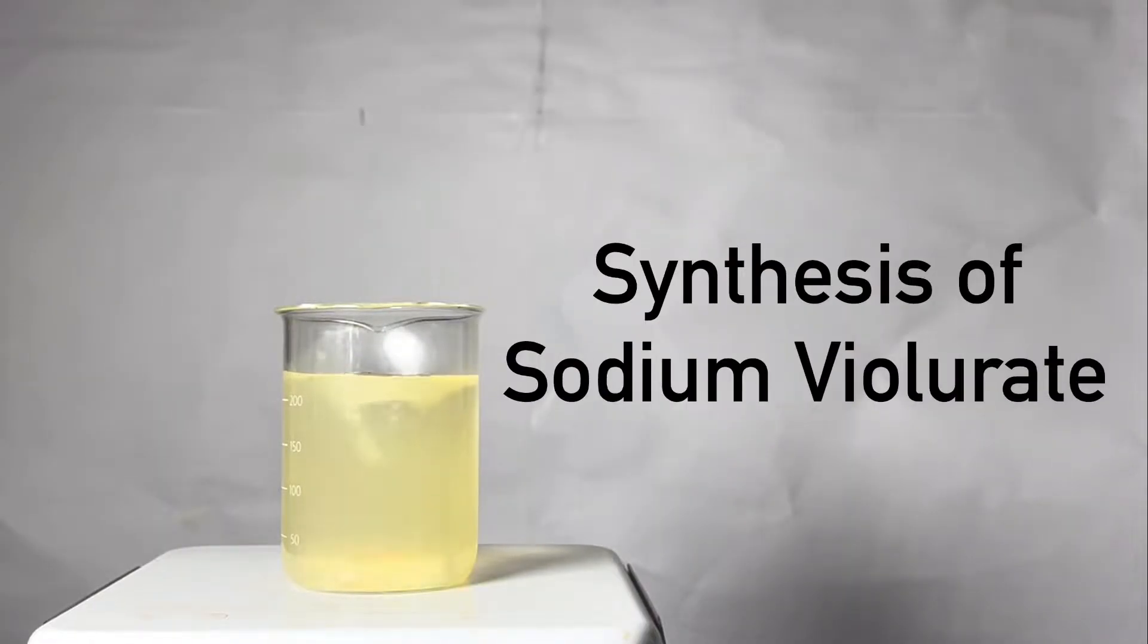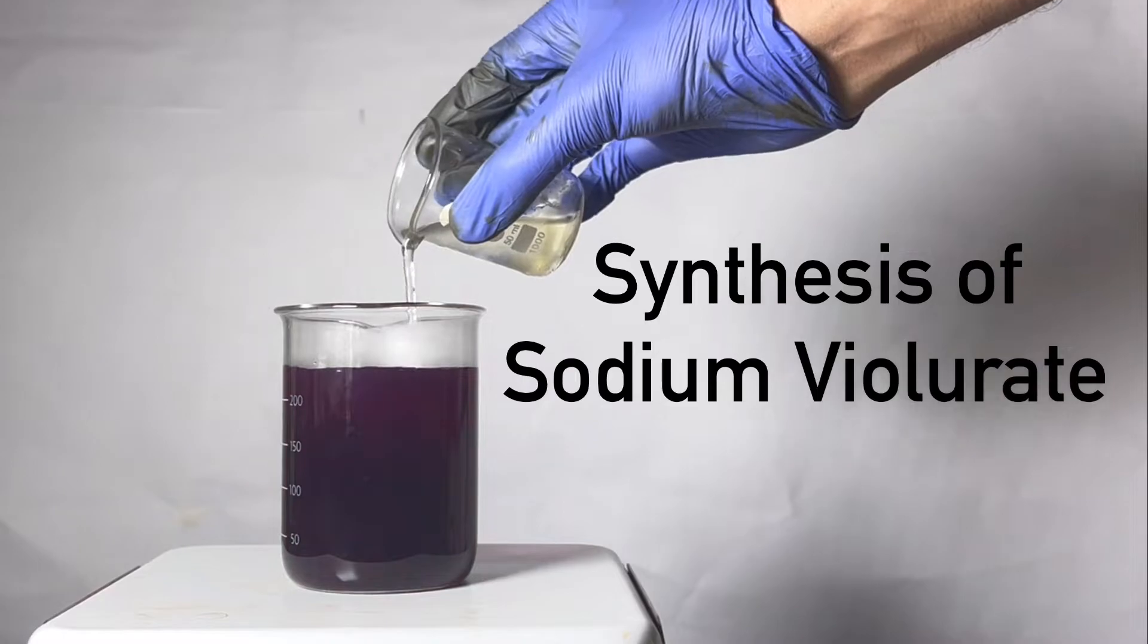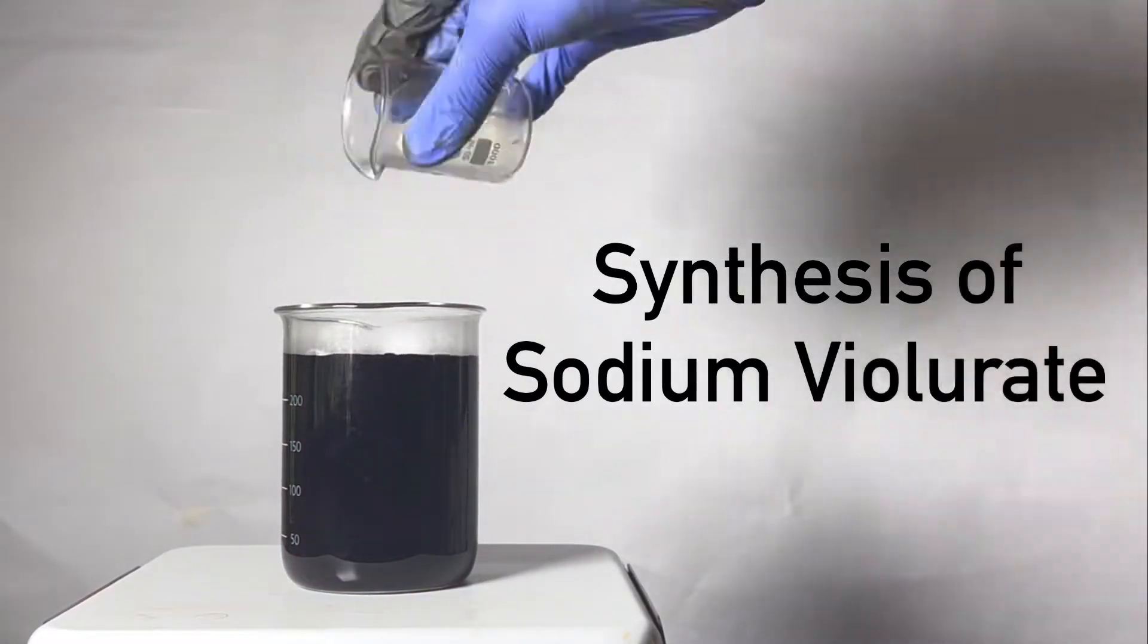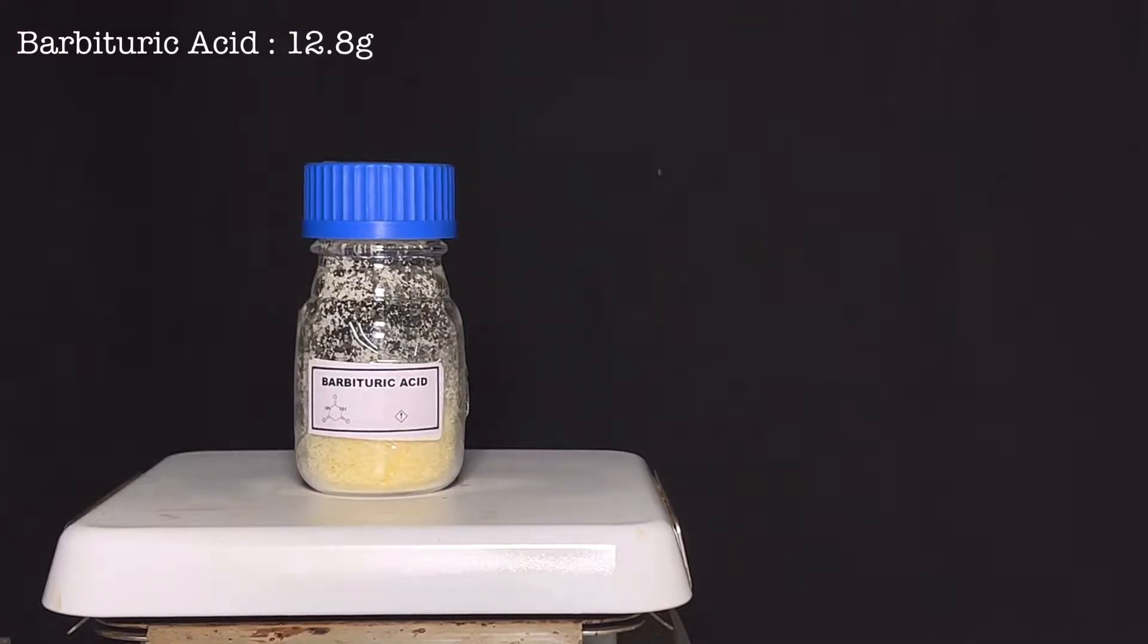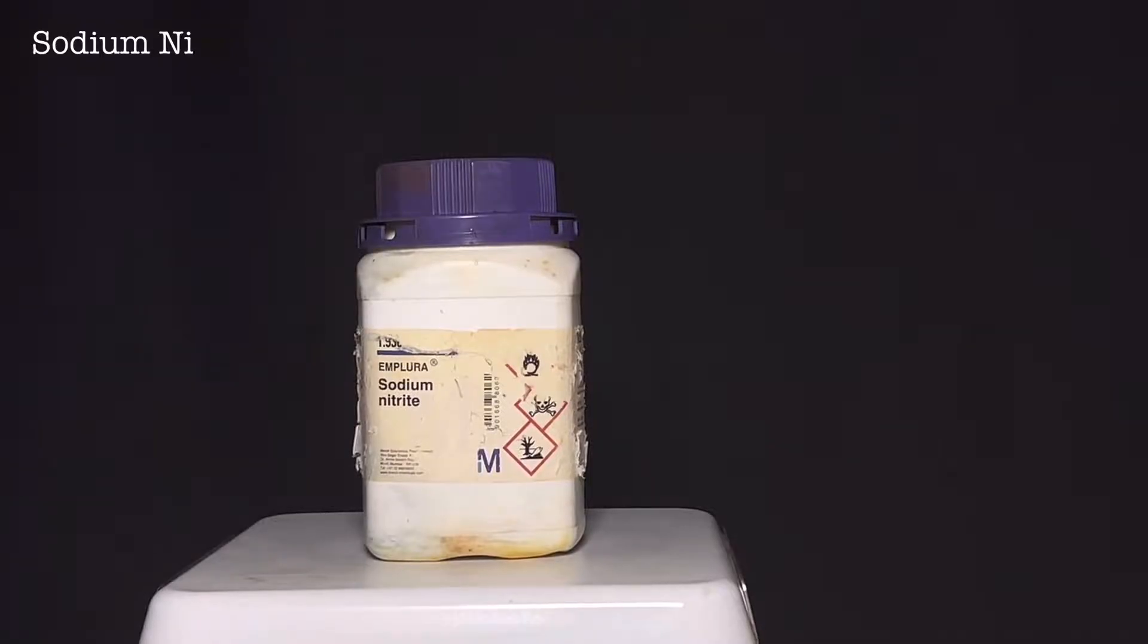Hello friends, in this video we will be synthesizing sodium violurate from barbituric acid. For this synthesis, you will need 12.8 grams of barbituric acid and 7.6 grams of sodium nitrite.